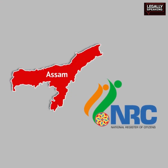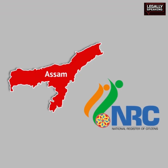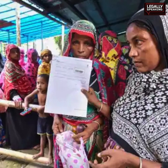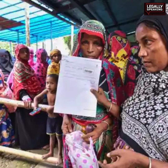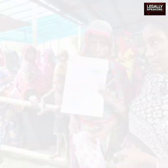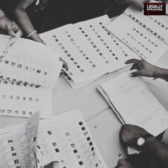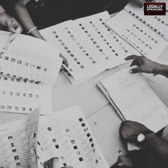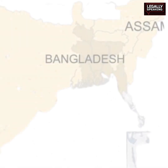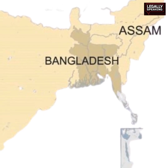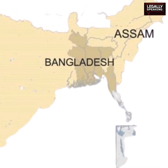The NRC was initially updated by Assam. This update aimed to incorporate the names of individuals and their descendants who were successfully registered in the 1951 NRC or found in electoral rolls until midnight on March 24, 1971. The primary objective of this update in Assam was to identify the illegal immigrants who had migrated from Bangladesh to Assam during the 1971 war with Pakistan.